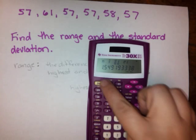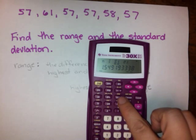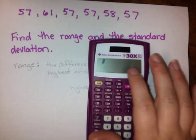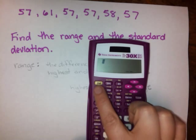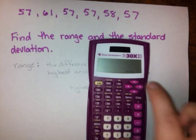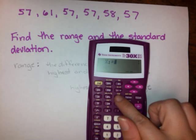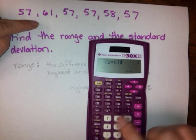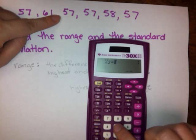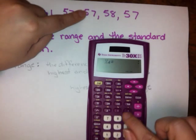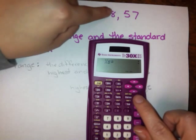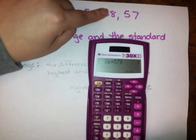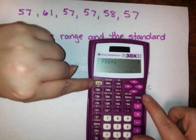Let's try again. I'm going to go into my stat menu, clear everything out. I'm going to have to go back and watch the video and figure out where I made the mistake. So I need to type data. I have 57 and that showed up once here. Here's 61. That showed up once. 57. 57. 58. 57. Okay.